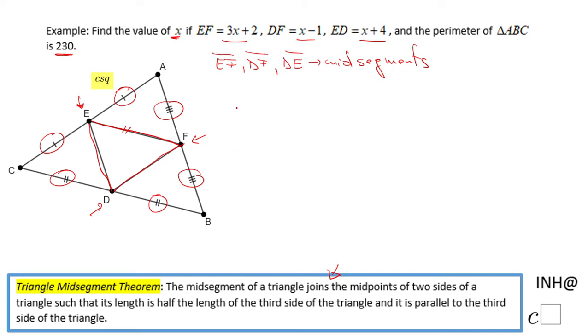For instance, let's take AB. It's twice the midsegment DE, so AB equals 2 times (x + 4).